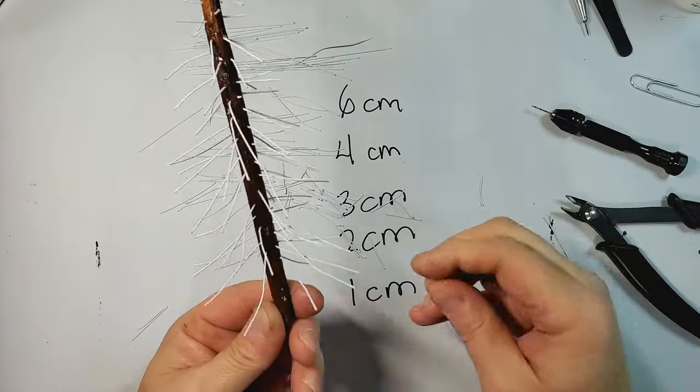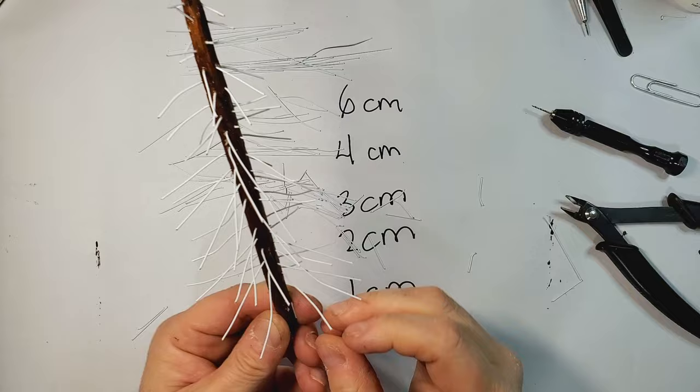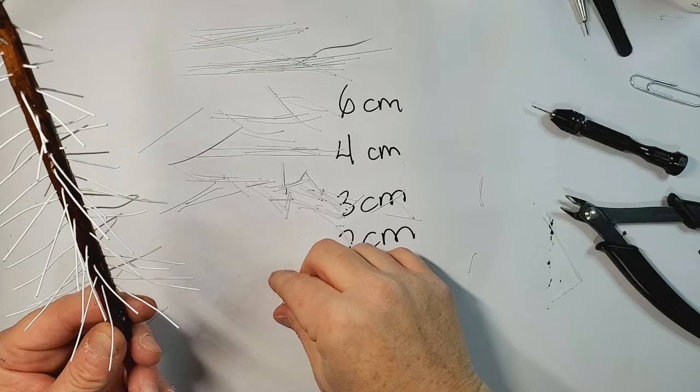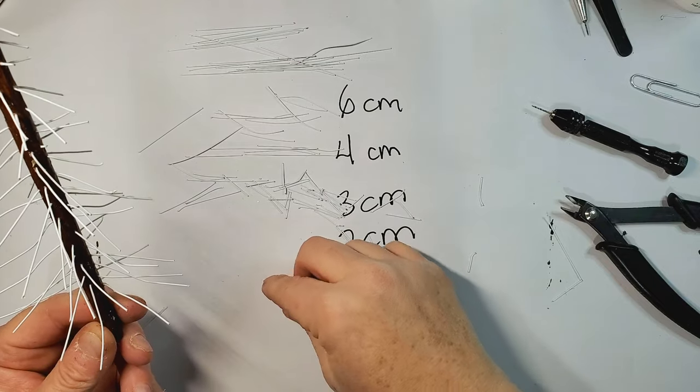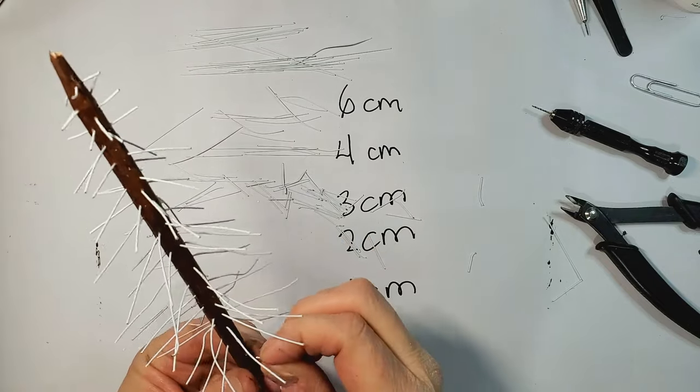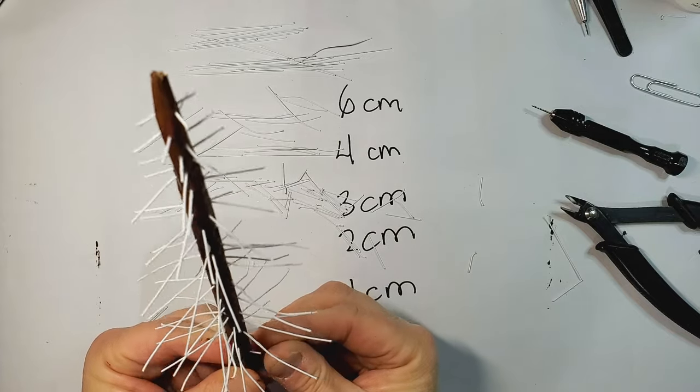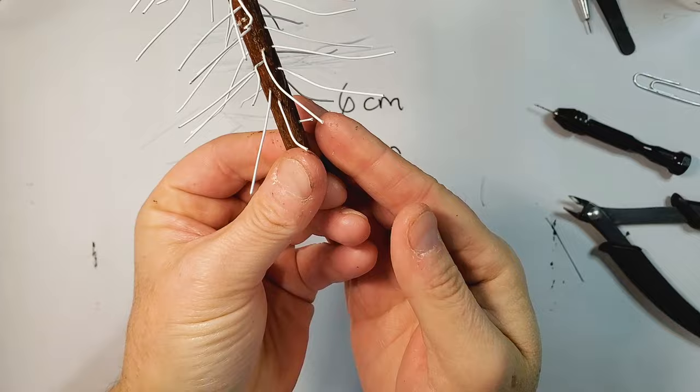So starting with the longer one, I'm going to start at the bottom of the tree and going up, we're going to use the smaller and smaller in size. So the one centimeter will be for the top of the tree and the six centimeter will be at the bottom of the tree.